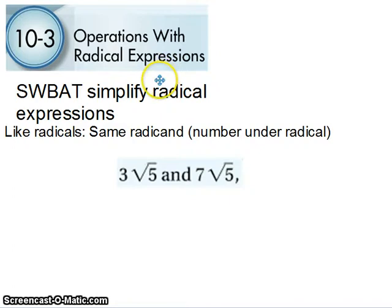We're going to treat these a lot like we do like terms. They have to have the same exact square root with the same exact number underneath, or we can't do anything to them. So it has to be the same radicand. This is called the radicand.